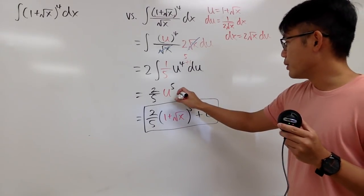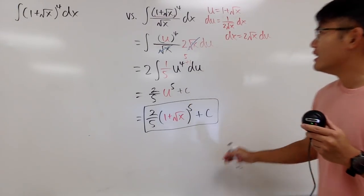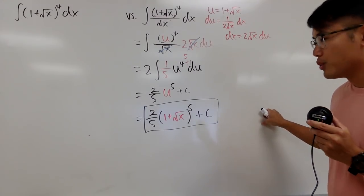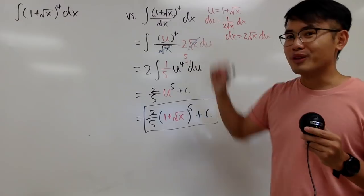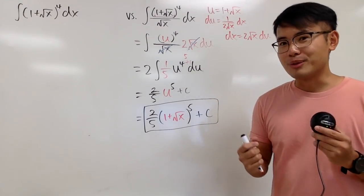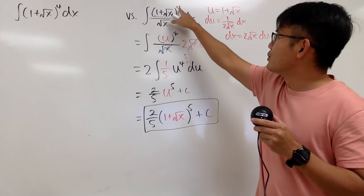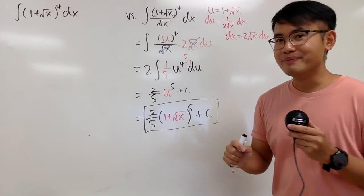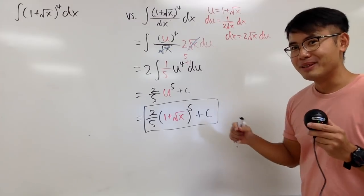Some people will say you should put a plus C earlier, but that's up to you. You could expand this out and integrate, but you'd have to do it four times. Imagine if this were to the 41st power — then you really should do the u-sub.